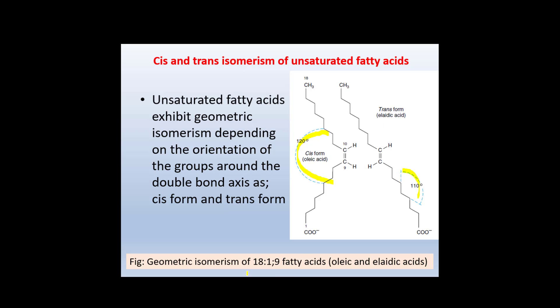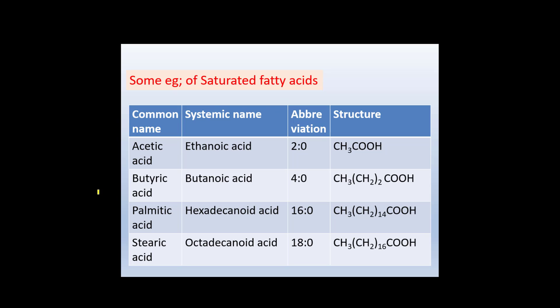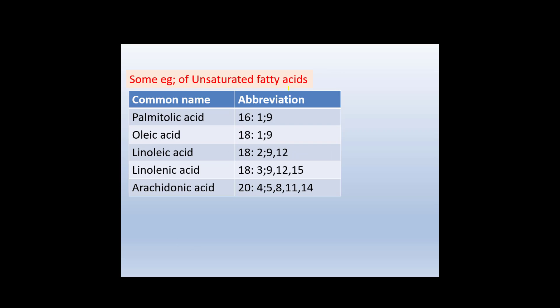Functions of essential fatty acids include: maintaining membrane structural function, transport of cholesterol, formation of lipoproteins, and prevention of fatty liver. They are also precursors of eicosanoids — prostaglandins, thromboxanes, leukotrienes, and lipoxins. Deficiency of essential fatty acids results in scaly skin or phrynoderma. Some saturated and unsaturated fatty acids are shown in the tables here. You may be asked to calculate the number of ATP obtained from complete oxidation of palmitic acid in your examination. Thank you, bye bye.